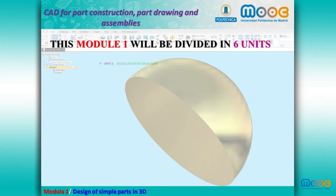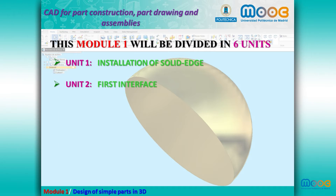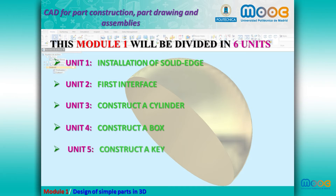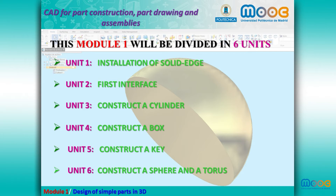This module will be divided in 6 units. Unit 1: Installation of Solid Edge. Unit 2 is the first interface. Unit 3, we are going to construct a cylinder. Unit 4 is the construction of a box. Unit 5 is the construction of a key. And finally, Unit 6, we are going to construct a sphere and a torus.